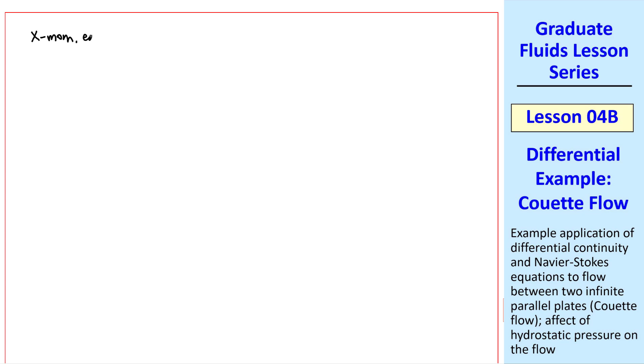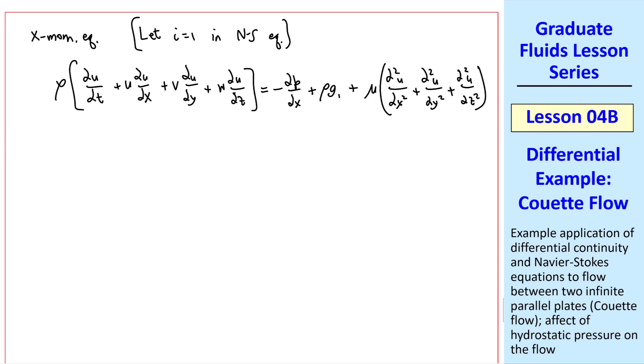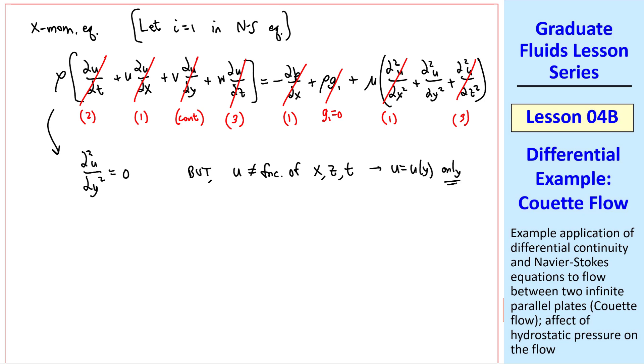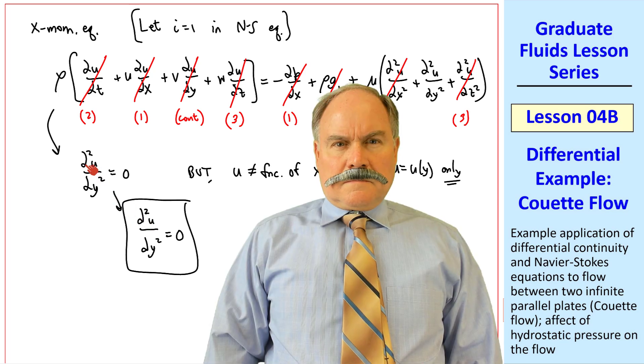To calculate the x component of velocity u, we use the x-momentum equation. We let i equal one in the Navier-Stokes equation. Again I'll write it out in Cartesian coordinates, where this time I wrote out the Laplacian. Many of these terms go away. The flow is steady, nothing is a function of x, v is zero, the flow is two-dimensional, there's no gravity term in the x direction. So there's in fact only one term remaining, and this equation reduces to del squared u del y squared equals zero. But similar to what we did with pressure, u is not a function of x, z, or t. U is a function of y only. So this equation becomes d squared u dy squared equals zero, where again we replace del with d.